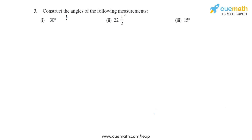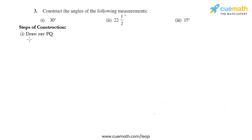Question 3 of this exercise says: construct angles of the following measurements — 30 degrees, 22 and a half degrees, and 15 degrees. Let's start with 22 and a half degrees first. For that, we need to draw 90 degrees, then bisect it to get 45 degrees, and bisect again to get 22 and a half degrees. Let's start with the steps of construction.